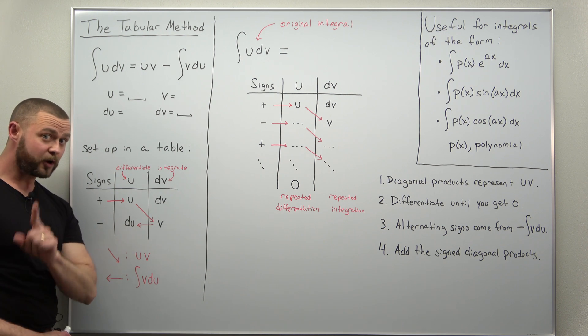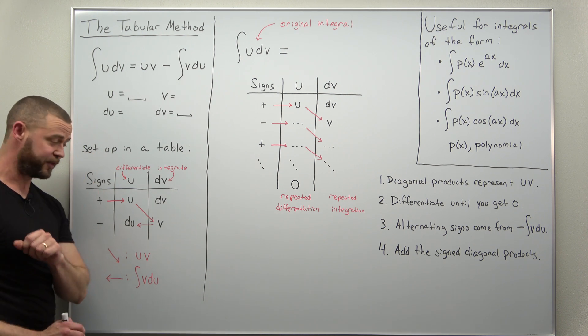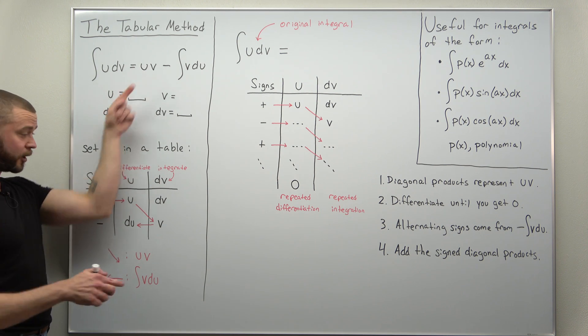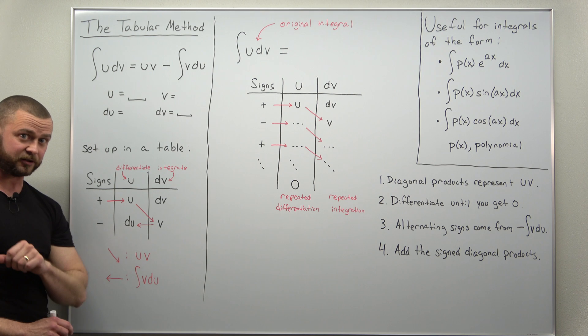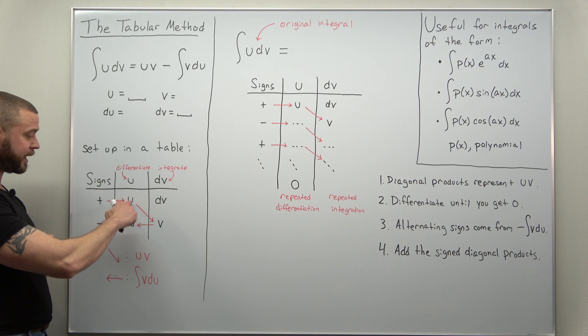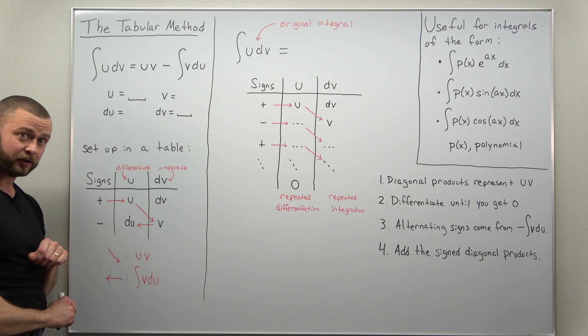For the examples we're going to get to with the tabular method, the most important thing to realize are your uv terms. Those are diagonal terms. We're going to basically take the sign, multiply across, and then go diagonally.